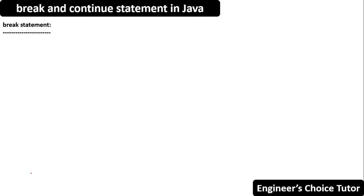Hi everyone. In today's lecture we will discuss about break and continue statements in Java. These are also called transfer statements or jump statements. Basically, these statements are used to transfer control from one point to another point in a program. First, let's discuss the break statement, then we will discuss the continue statement in Java.